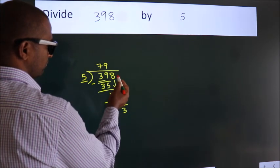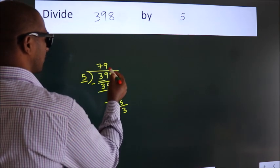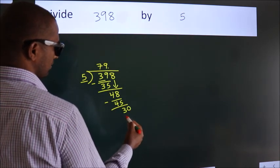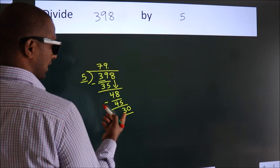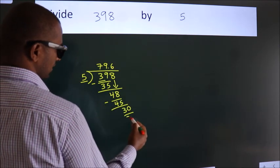After this, no more numbers to bring down. So what we do is we put a dot and take 0, giving us 30. When do we get 30 in the 5 table? 5 times 6 equals 30.